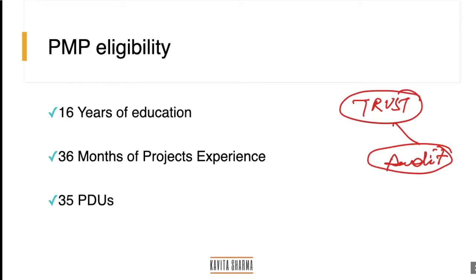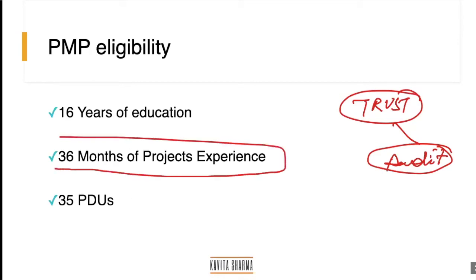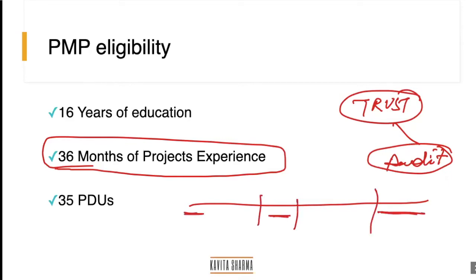Another question: if someone has two years of project management experience, then a gap of four to five years with other experience, and then one more year of PM experience in the eighth year — can those three years be submitted? Kavita confirmed: it does not have to be continuous. You can pick projects from different time periods within the last eight years. It doesn't matter as long as the total reaches 36 months.